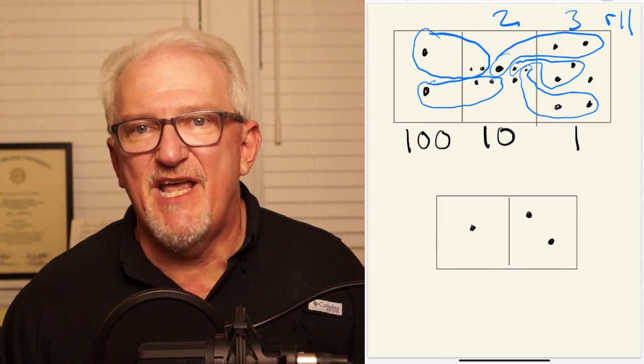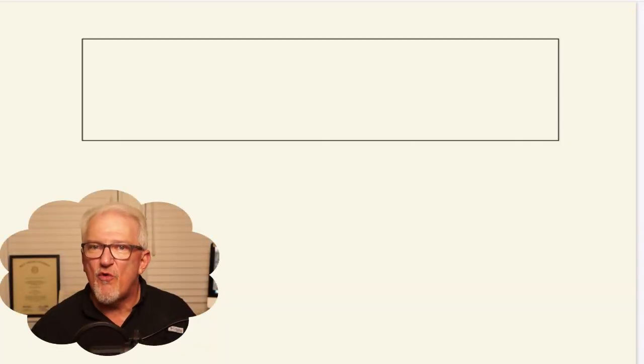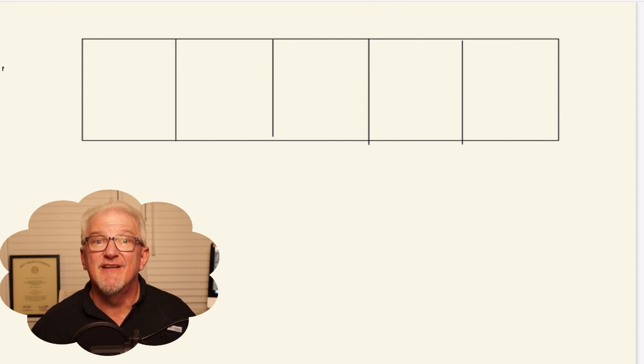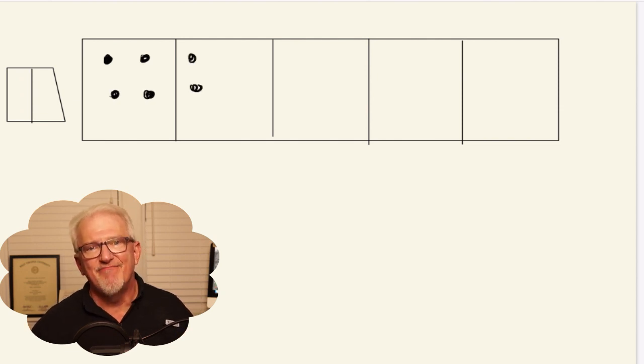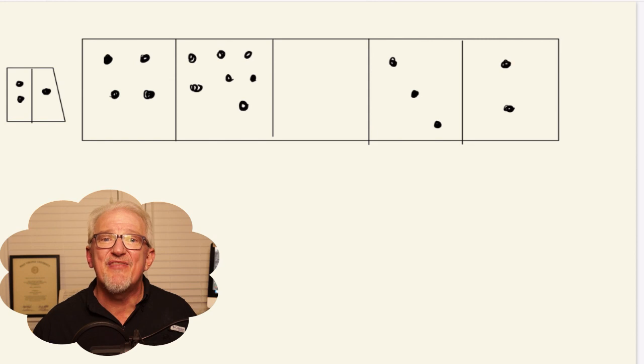As a final example, let's calculate 47,032 divided by 21. This will require the use of five boxes. Each dot in the rightmost box represents one dot. Each dot in the second box from the right represents 10, and so on until we arrive at the leftmost box, where each dot represents 10,000.